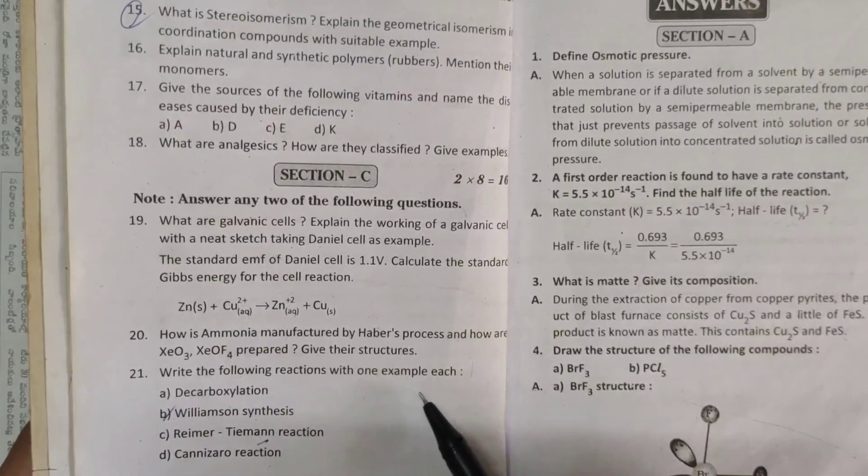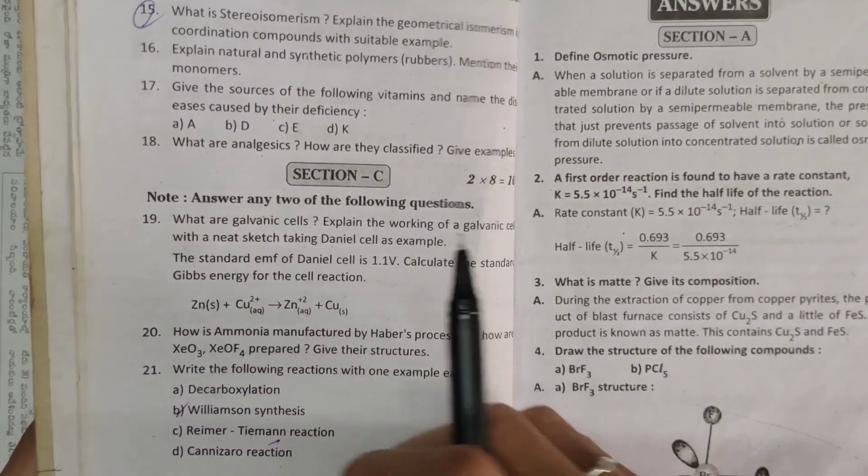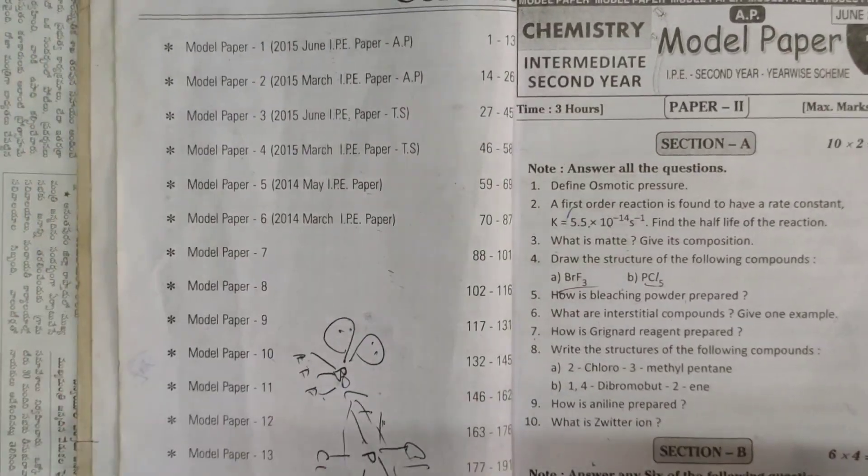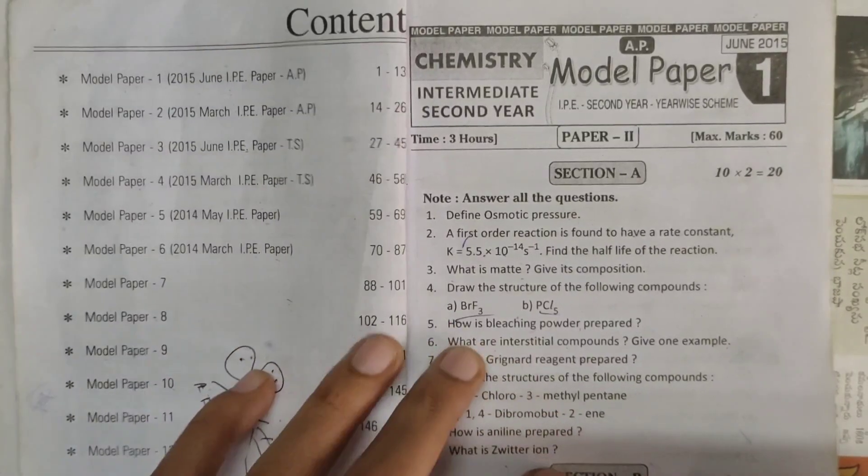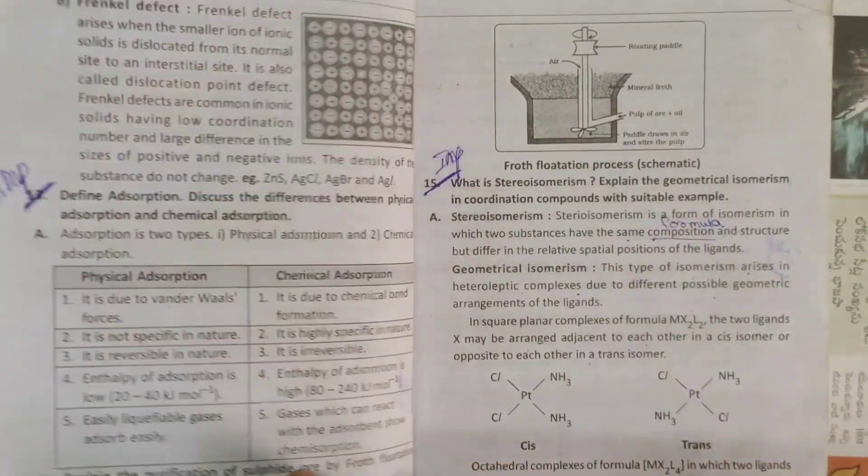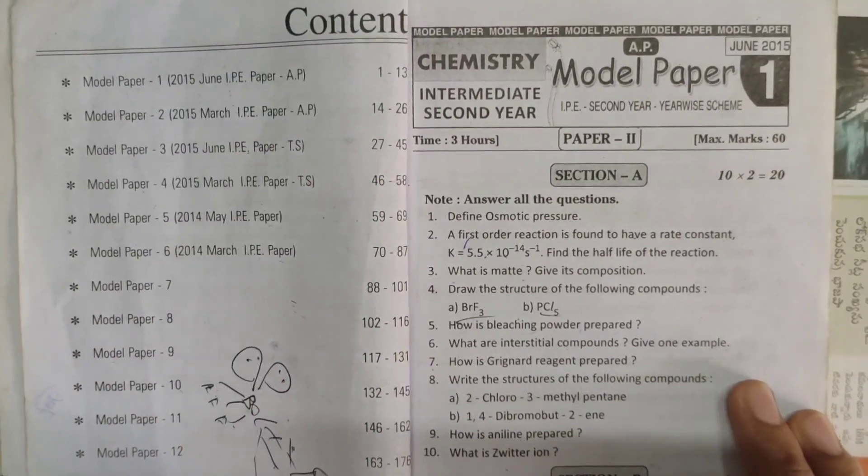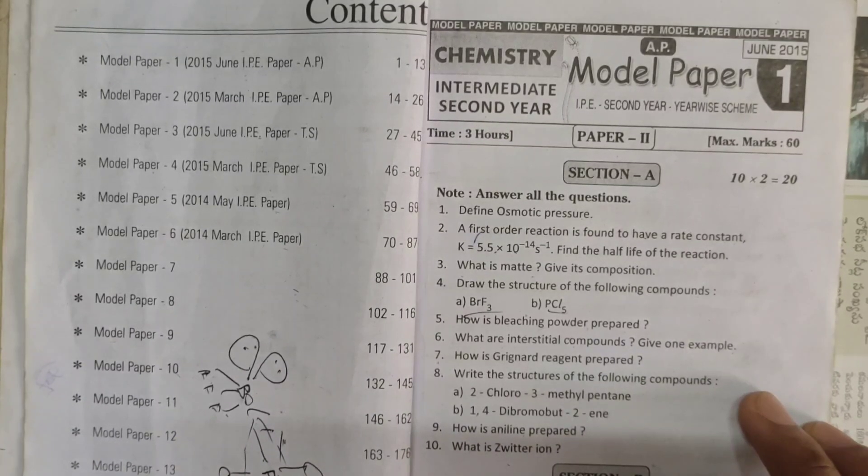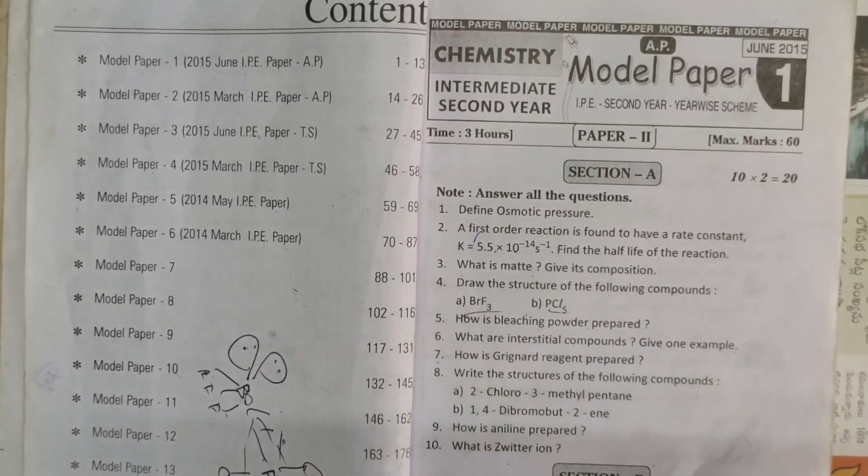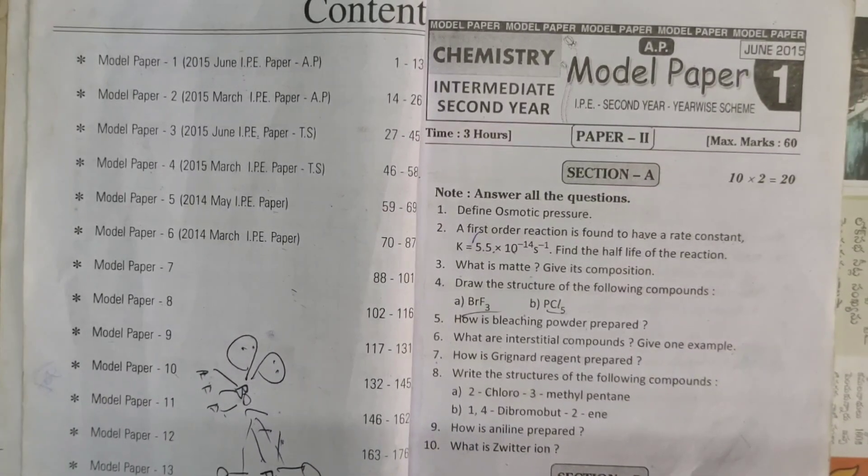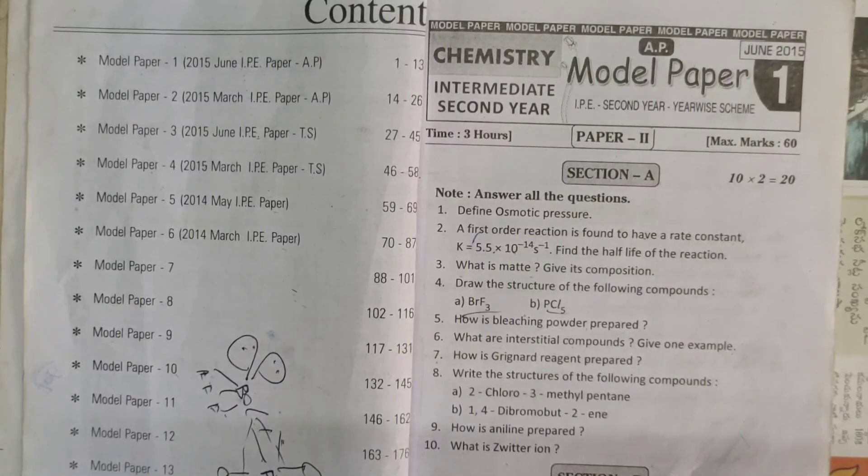And last one, write the following reactions with one example each. So you need to write examples for each of the reactions. This is overall model paper related. Okay, chemistry, senior intermediate chemistry related, first model paper. If you want to write answers, we have materials available also. So please check this. All of this is in a playlist, senior intermediate model papers, that playlist is there, you can check. If you have any doubts about this video or if you want any videos, mention in the comment section, I will definitely make the video. See you next video friends, bye bye now.